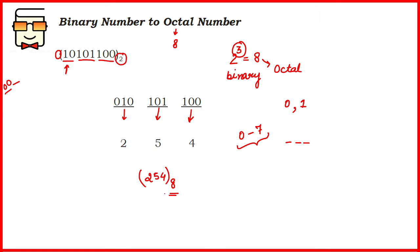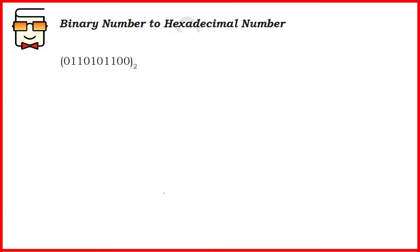Now coming to how to convert binary number to hexadecimal number. Hexadecimal number system has a radix of 16. So as you may have guessed, 2 raised to the power of 4 is 16.